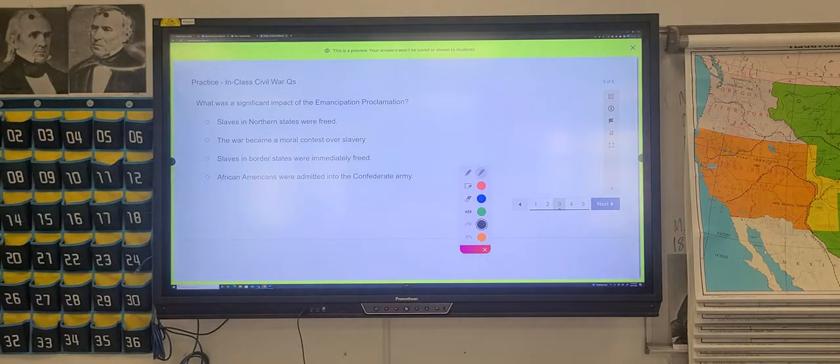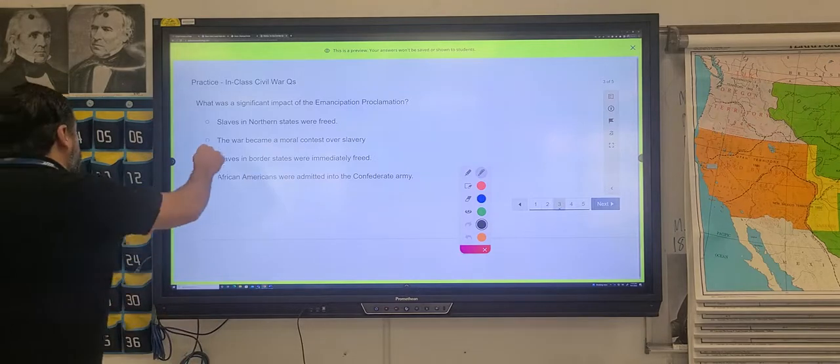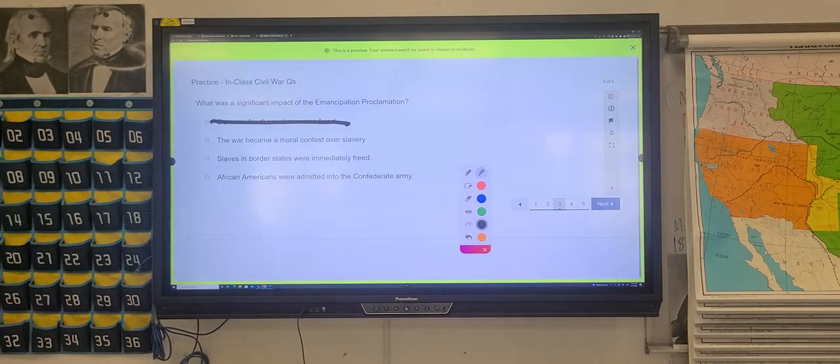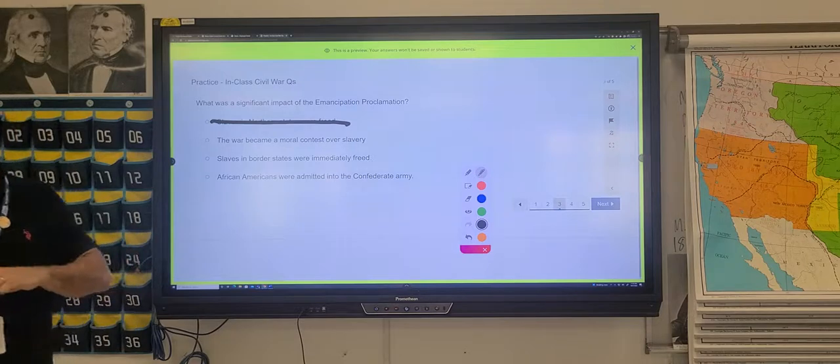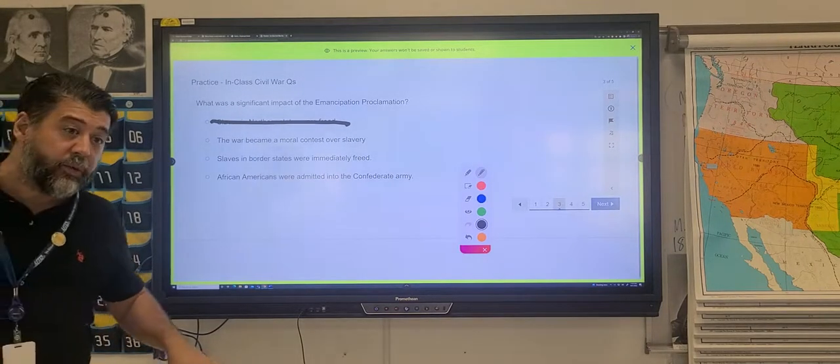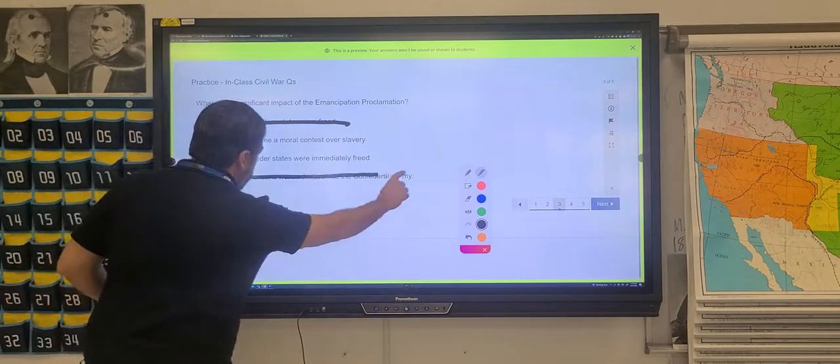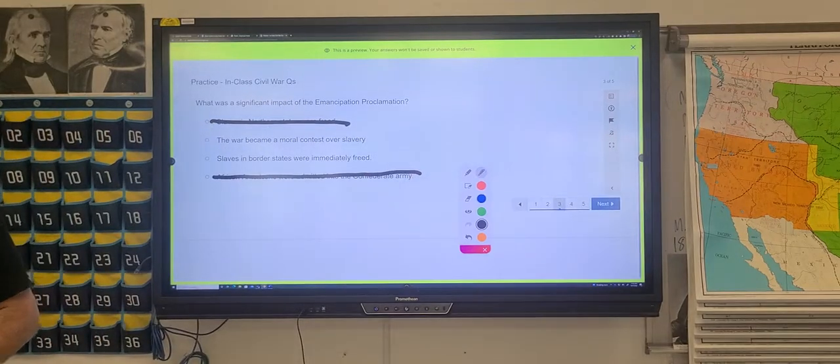All right. Let's start crossing out stuff that we know to be wrong. Slaves in northern states were free. That's wrong. Why do you think that's wrong? Because there weren't any slaves in the north. Now, if I were to guess, my odds just went up to 33% chance. Is there another one I could pull out of there that I know to be wrong? African Americans were admitted to the Confederate Army. We know that didn't happen because the last thing that they were willing to do was to put a rifle in a slave's hand.